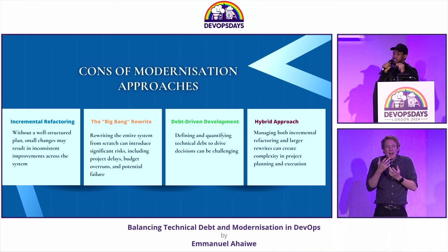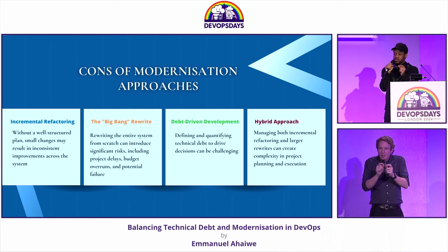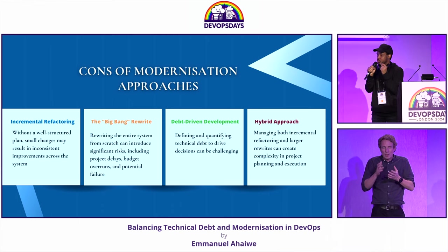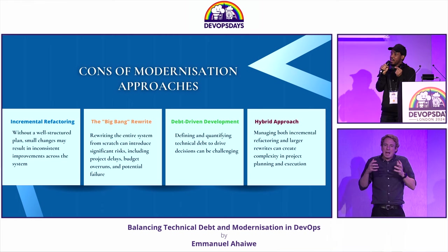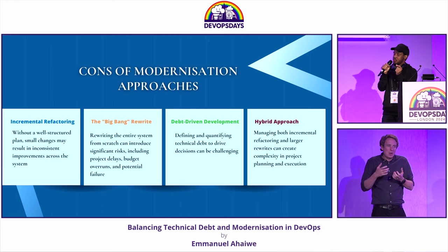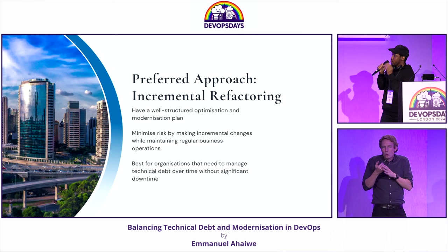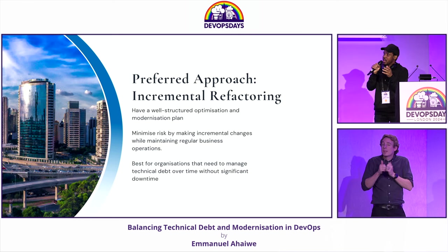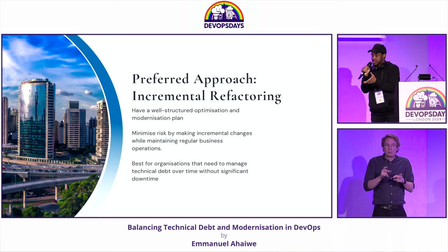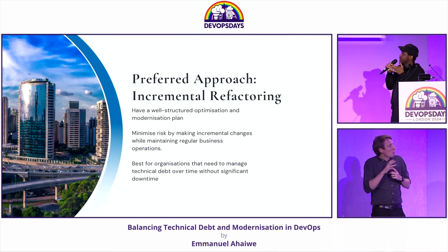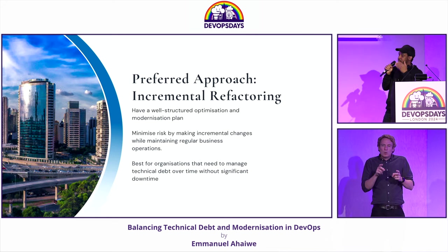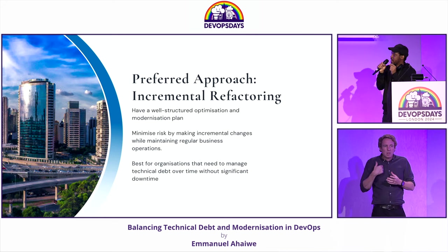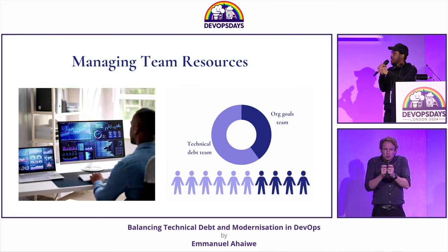When dealing with incremental refactoring, you have to come up with a structure to create a plan of how you're going to modernize the codebase or infrastructure. This is our preferred approach. It's very important to have this approach rather than a big bang approach. You minimize risks by incremental changes — you don't need to make 500 lines of changes.